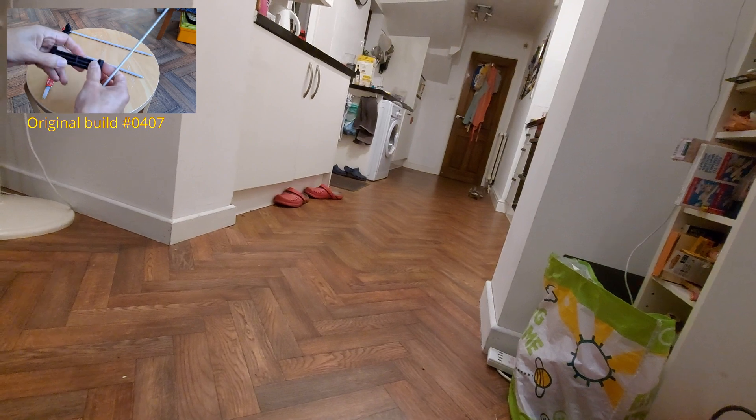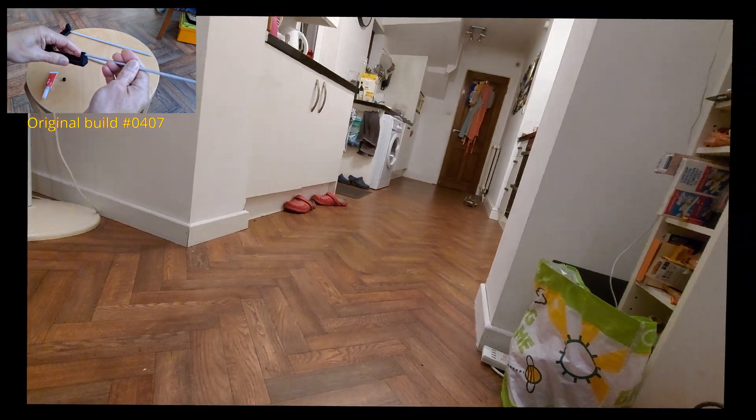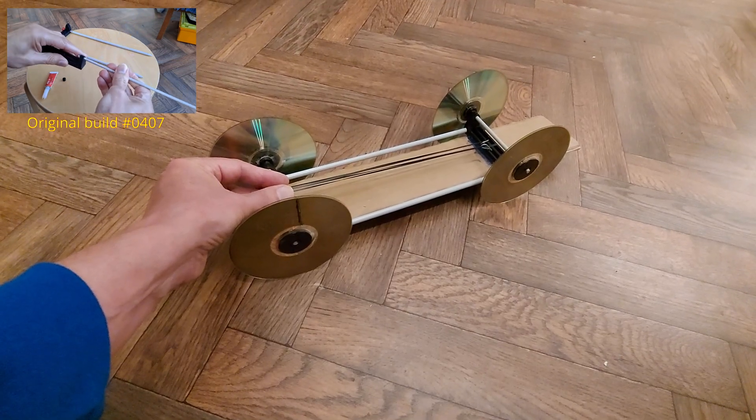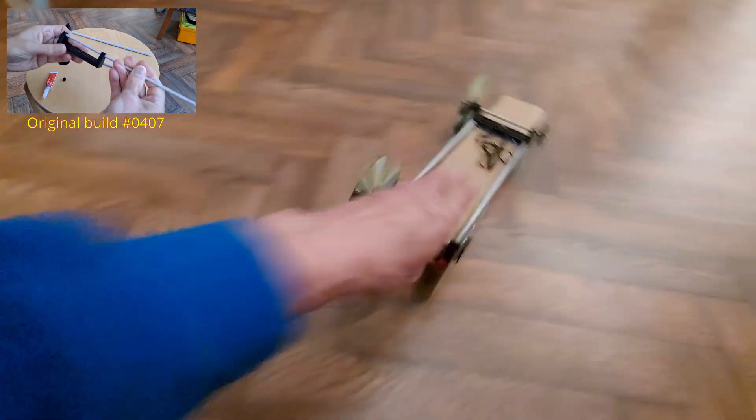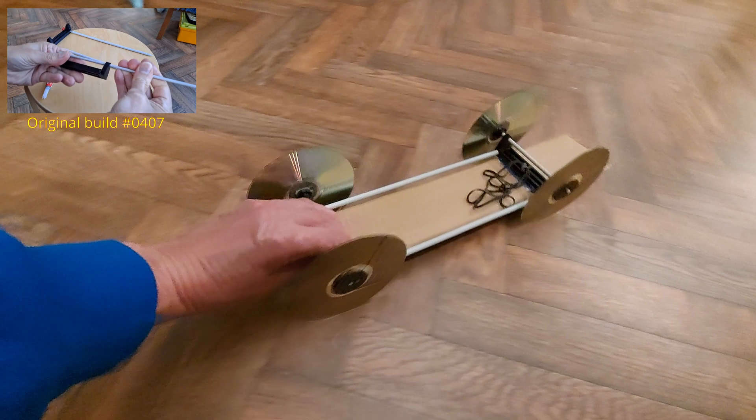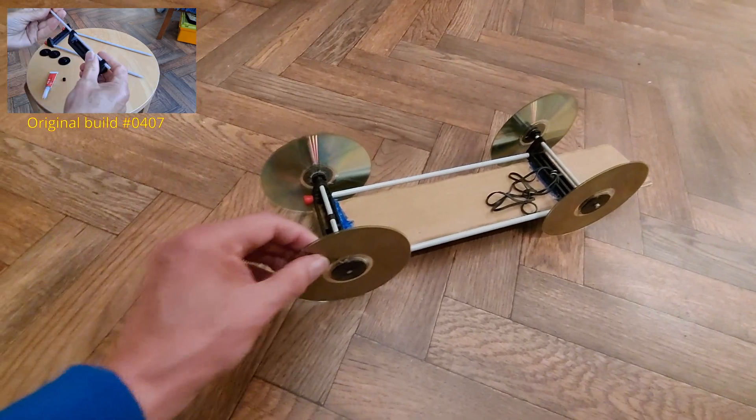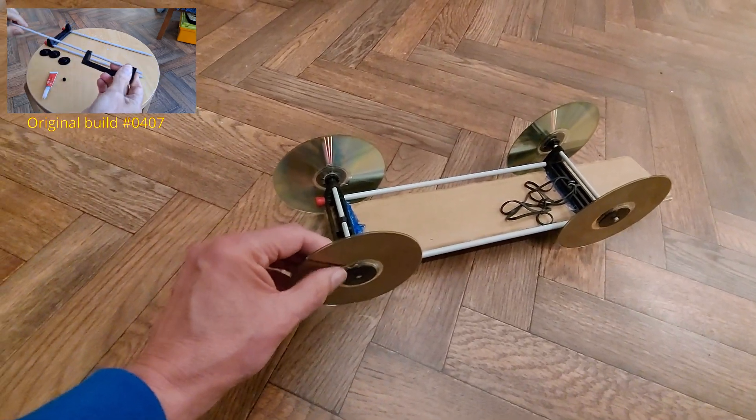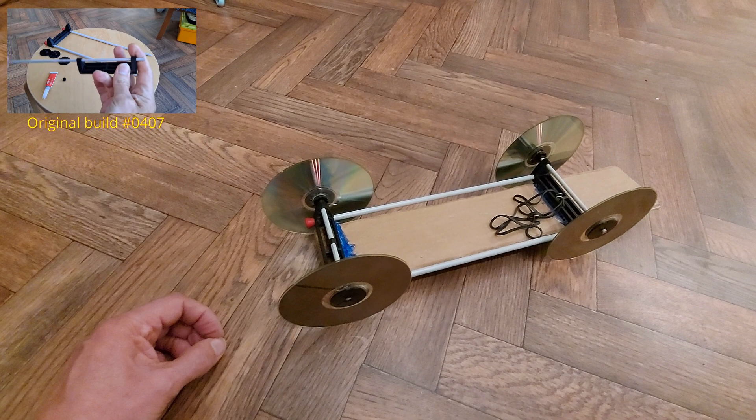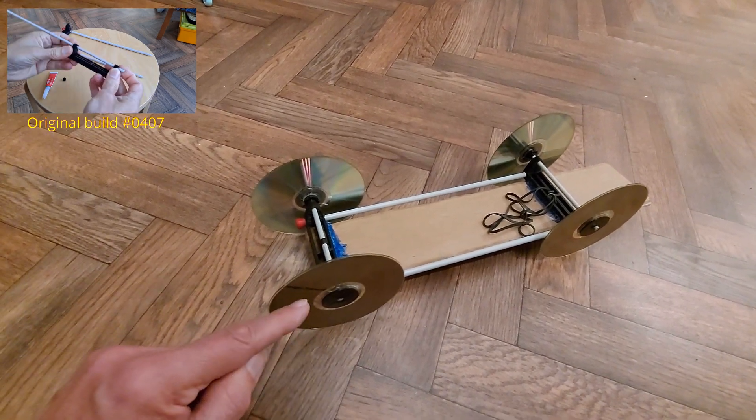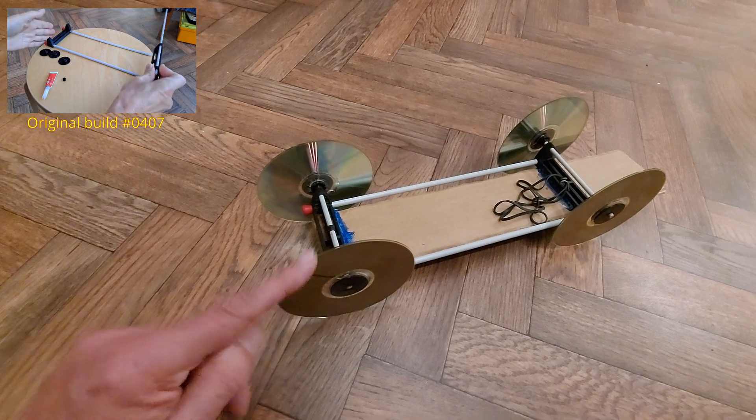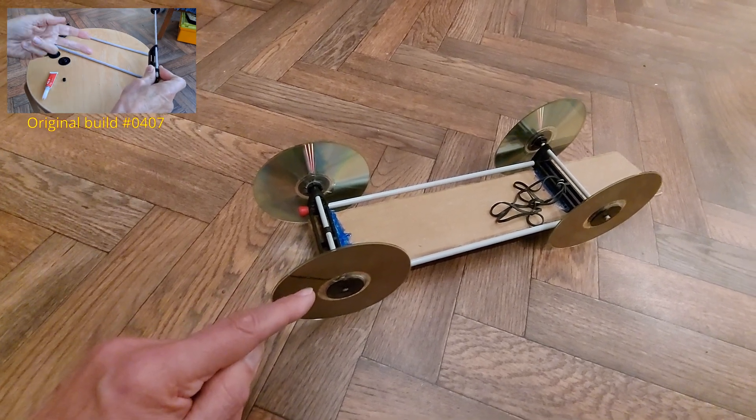We'll now try it with more rubber bands and see if we can get the wheels to spin. Double the rubber bands. Oh yes, and that was your wheel spin. So you're not going to go anywhere if you're wasting power with wheelspin.